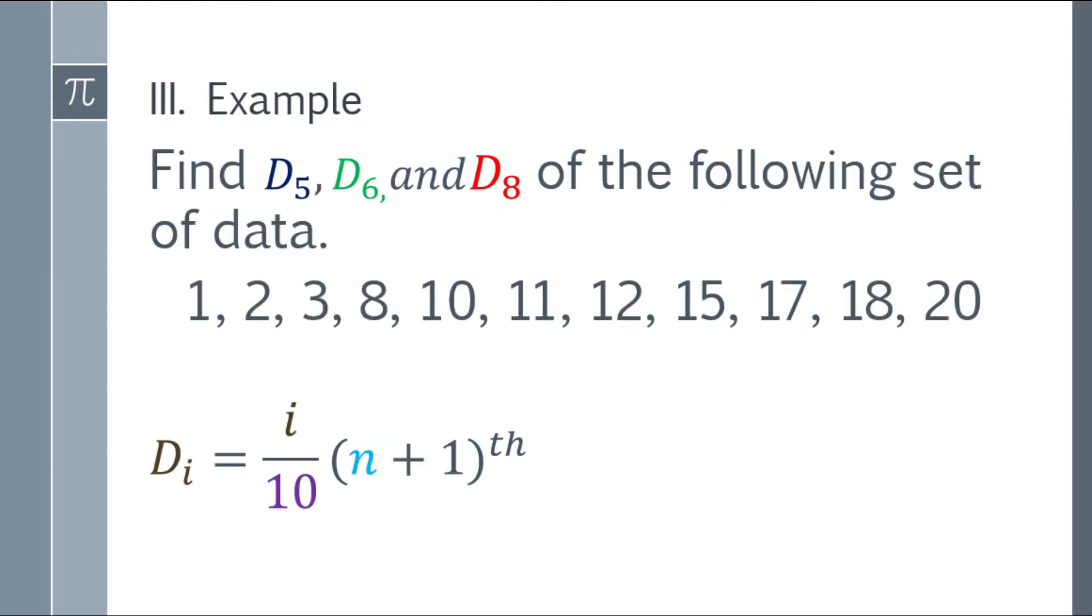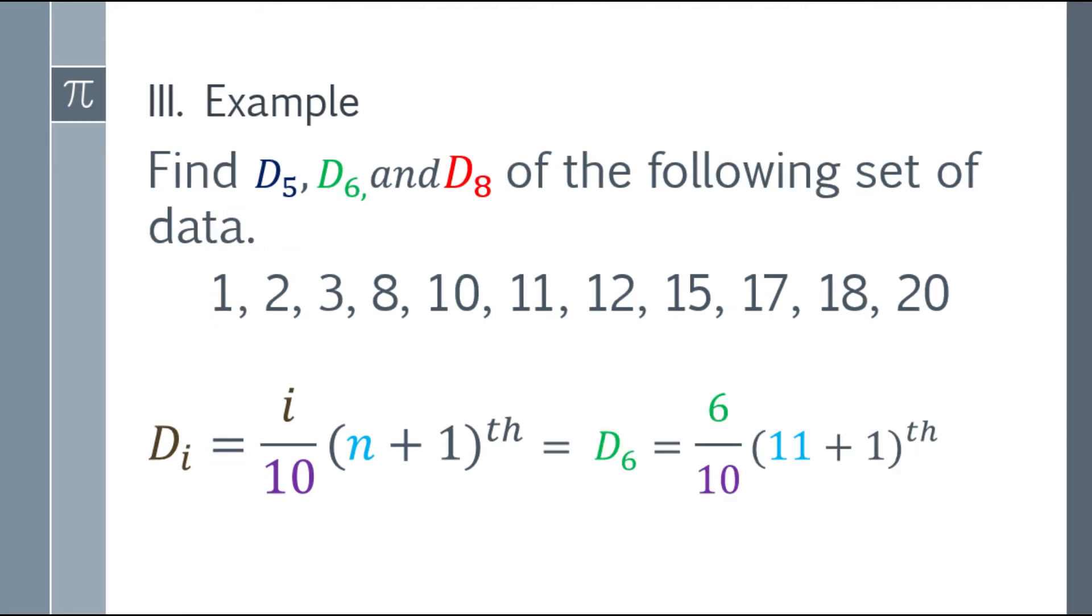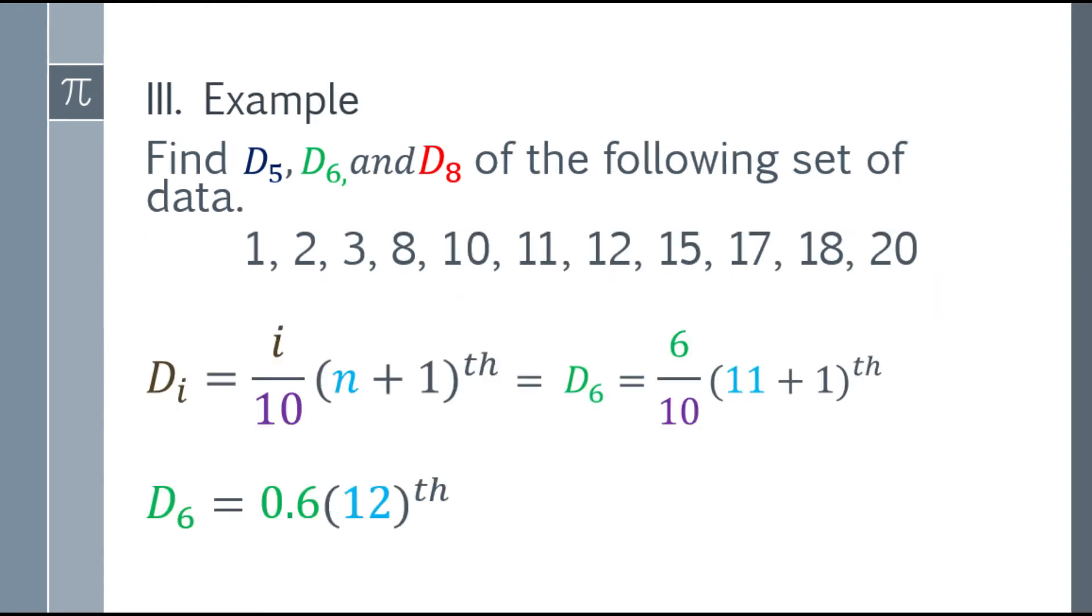Moving on, let's go to D6, or 6th decile. So, write the formula. Next, substitute the values. Next, we have to simplify it. So 6 over 10, that will be 0.6. And 11 plus 1, that will be 12.